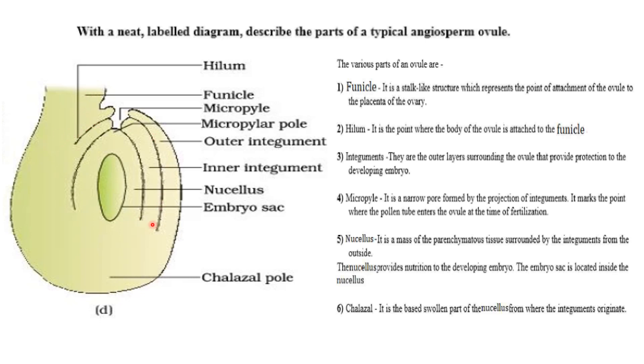Next is integument. The outer layer surrounding the ovule that provides protection to the developing embryo. Next is micropyle. It is a narrow pore formed by the projection of integuments and it marks the point where the pollen tube enters the ovule at the time of fertilization.